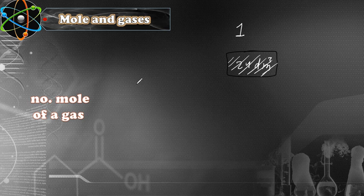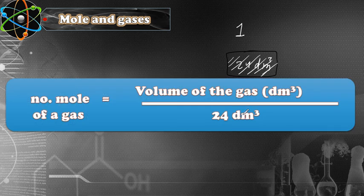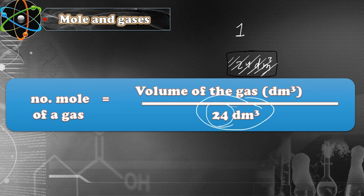So if you want to find the number of moles of a gas, that equals the volume of the gas in dm³ divided by 24 dm³. This 24 dm³ is a constant which you'll use all the time — to divide or multiply — whether you have a problem using a gas or, as we'll see later, a solution.